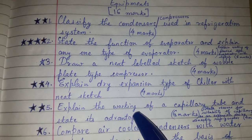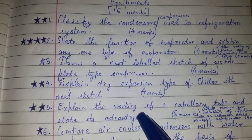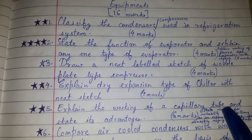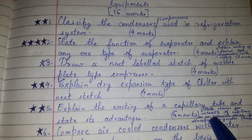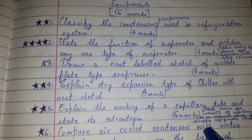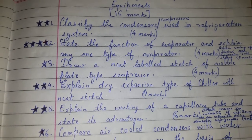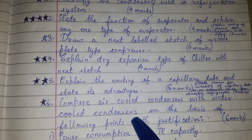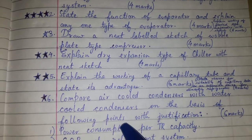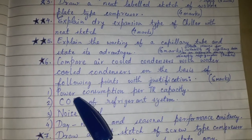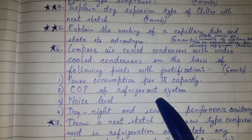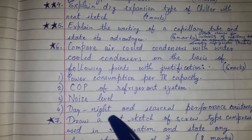A twisted version of the capillary tube question may be asked as: state reasons for suitability of capillary tube as an expansion device for domestic refrigerator, for four marks. Another important question: compare air cooled condenser with water cooled condensers on the basis of the following points with justification, for four or six marks.